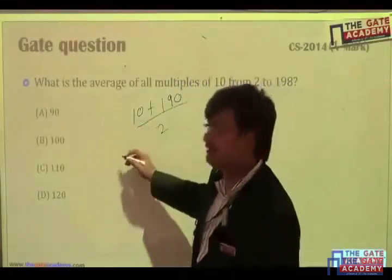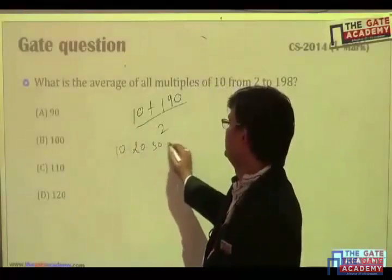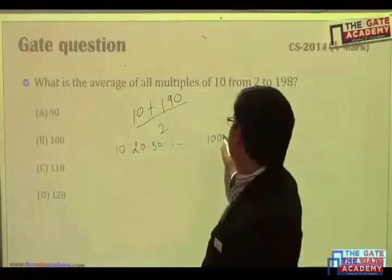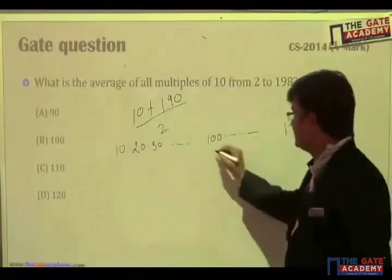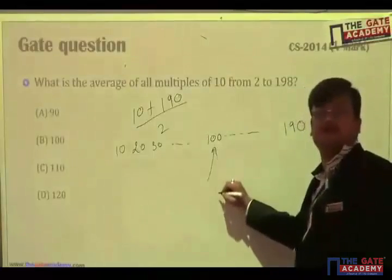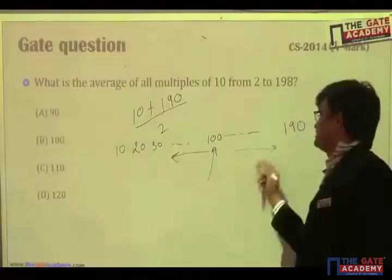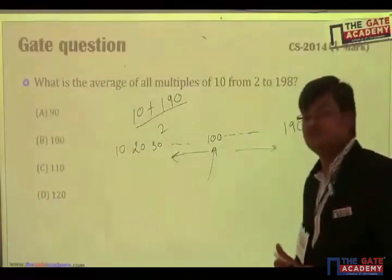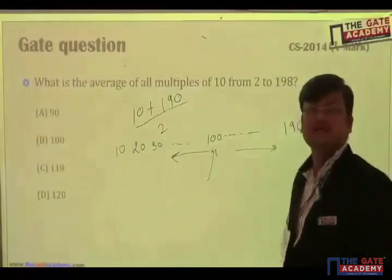Or also, the second way to find the middle value. Since all are in AP. 10, 20, 30, 100, 190. So, this 100 is in between. Nine numbers here, nine numbers here. That means the average is middle value which is 100. Done? Clear?